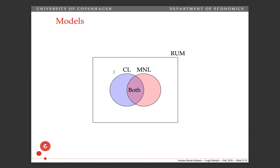What we'll be talking about is random utility models as the general frame. Within that set of models, we have two classes: conditional logit models and multinomial logit models. There can be models that have both features, but we'll generally be making the distinction between these two.